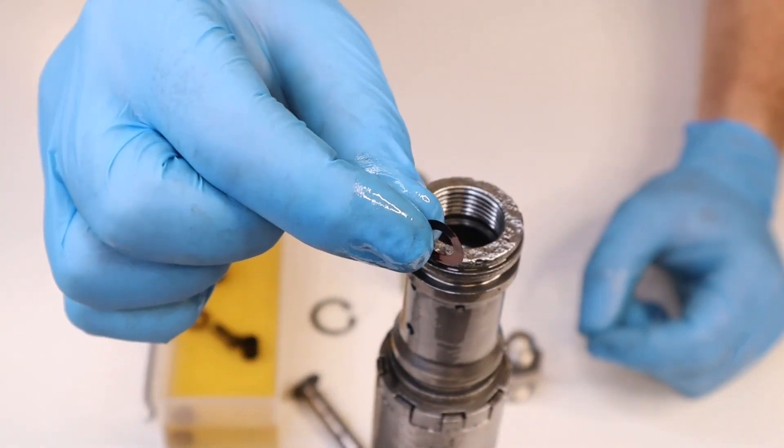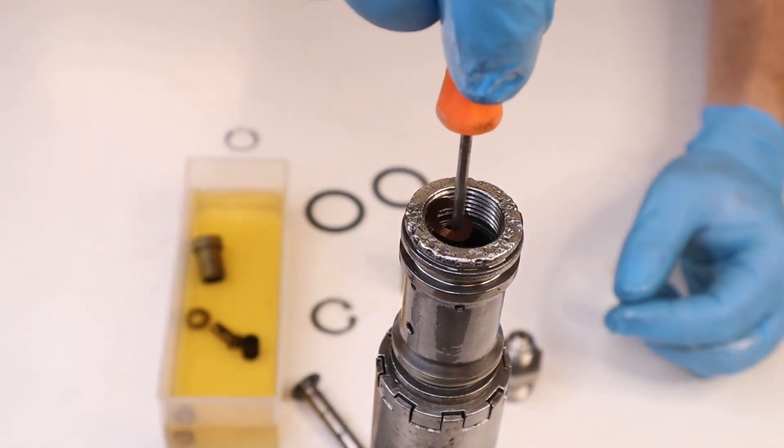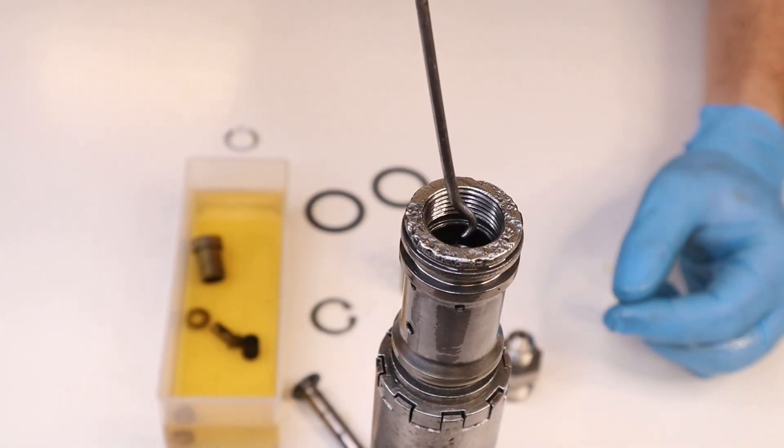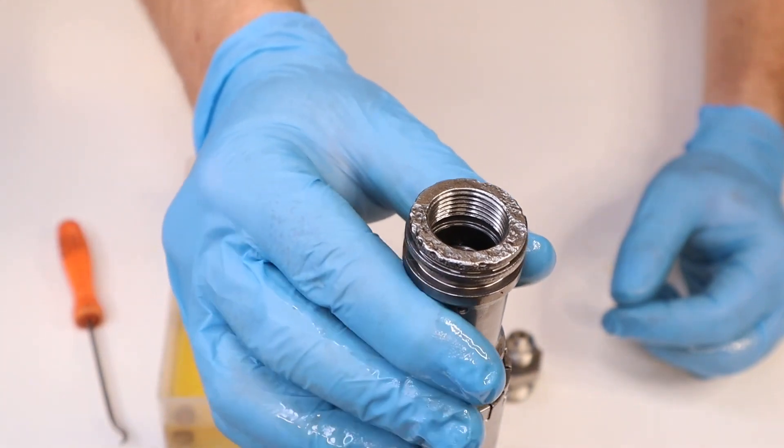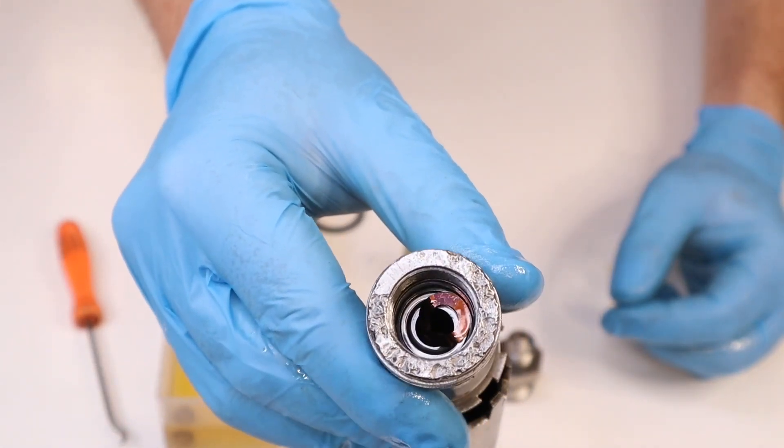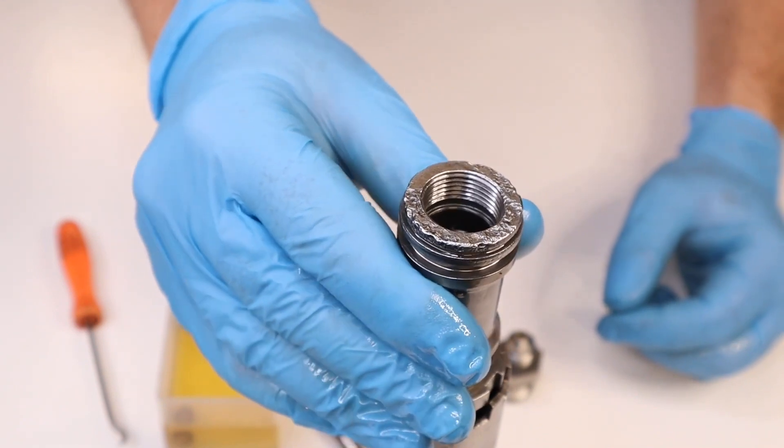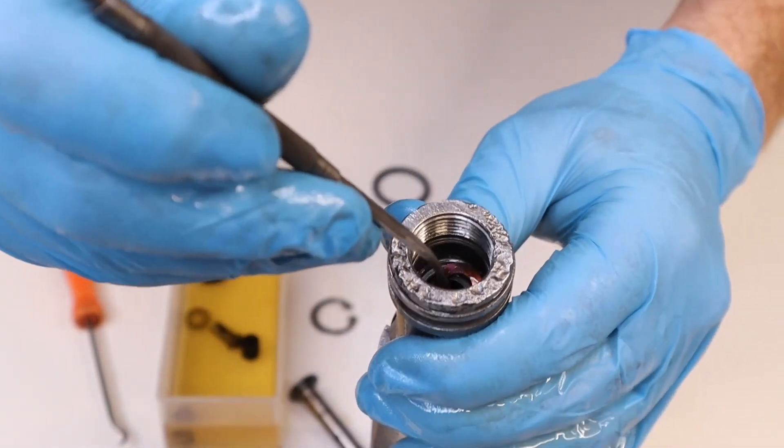Next is the wavy washer. You want to do this with a non-magnetic tool. You've also got to make sure that that sits down in the middle. As you can see that's not. I'm just going to centralize that with the pick.